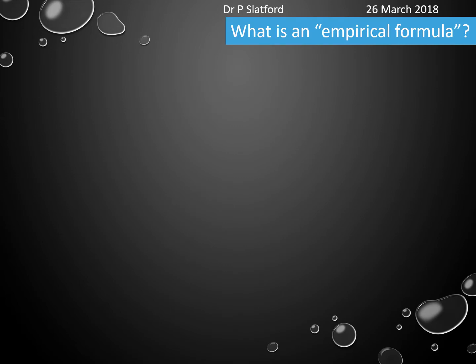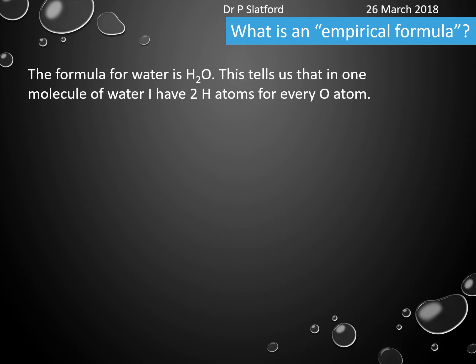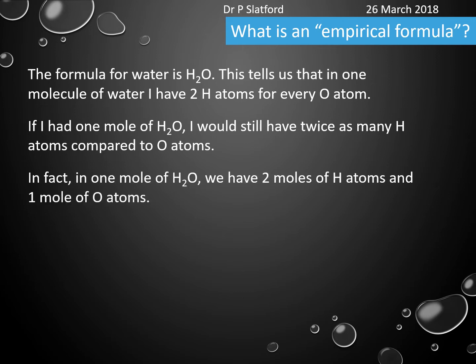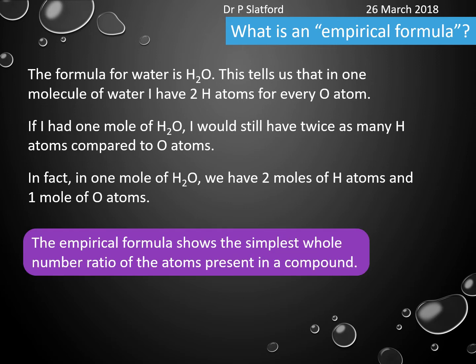So what is empirical formula? If we look at a molecule — let's take water for example — the formula for water tells us the ratio of atoms within the molecule. Here I have two hydrogen atoms for every one oxygen atom. If I had one mole of water, I would still have twice as many hydrogen atoms as oxygen atoms — two moles of hydrogen atoms and one mole of oxygen atoms.